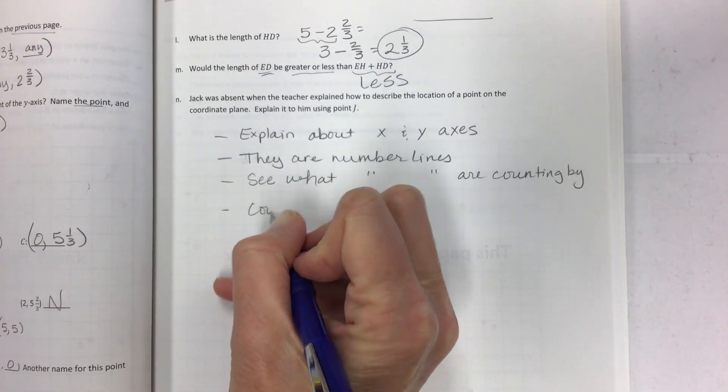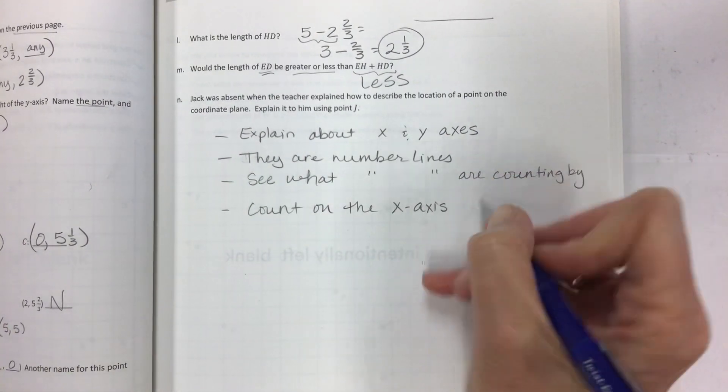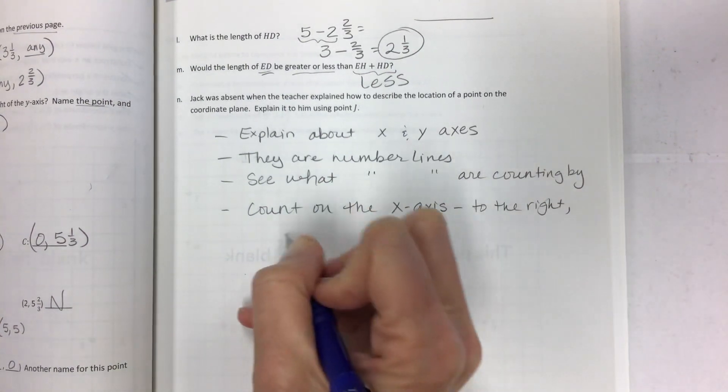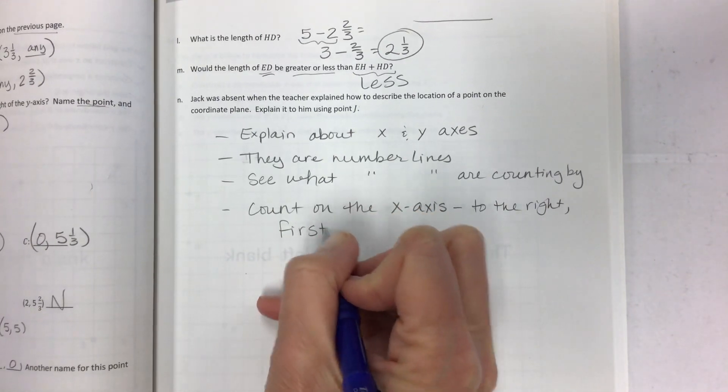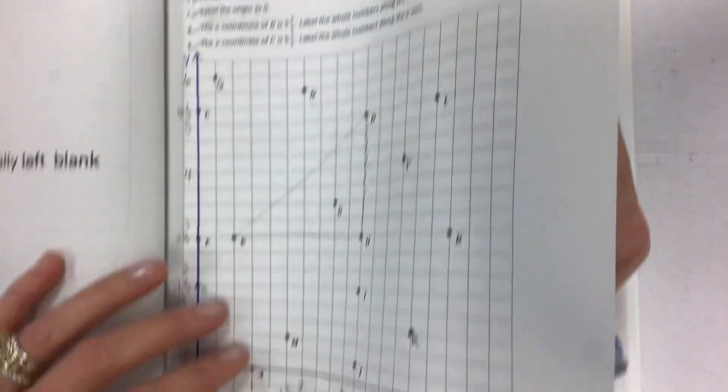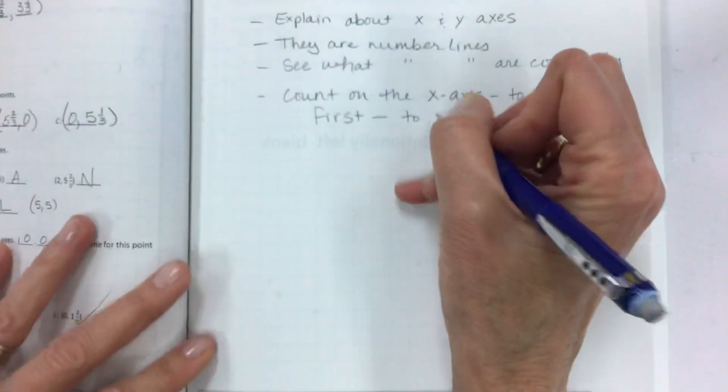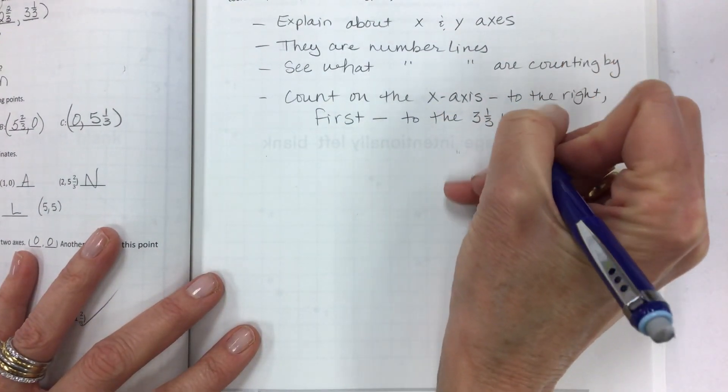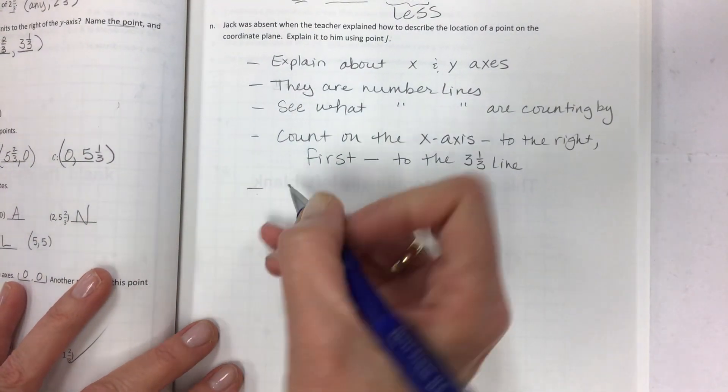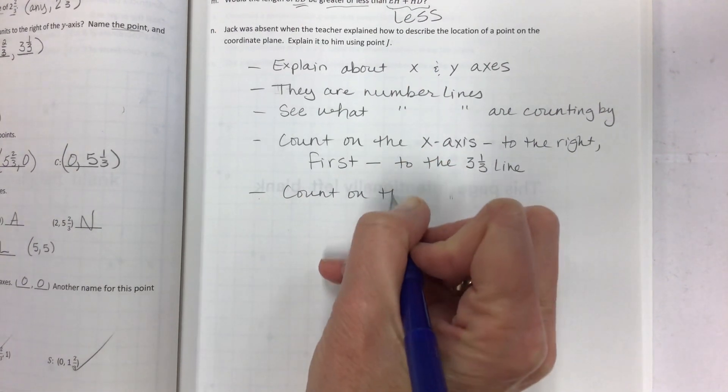Then count on the x-axis first, which goes to the right, first. And then in order to get to J, to the three and one-third. Now once you get to the three and one-third line, then you can count on the y-axis.